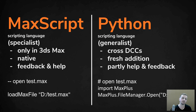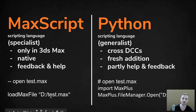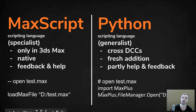Let's compare both code sides of MAXScript and Python. We want to open the test .max file. In MAXScript we would say 'loadmaxfile' and then give it the file path in quotes. In Python we'd first need to import the 3ds Max API — we say 'import maxplus' — and then we say 'maxplus.filemanager' and use the function 'open' and give it the path.